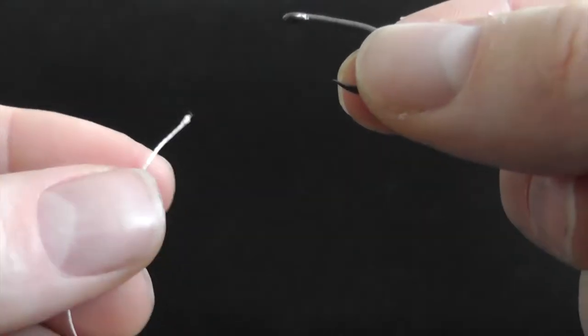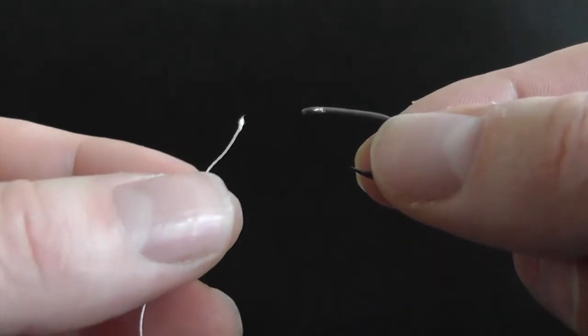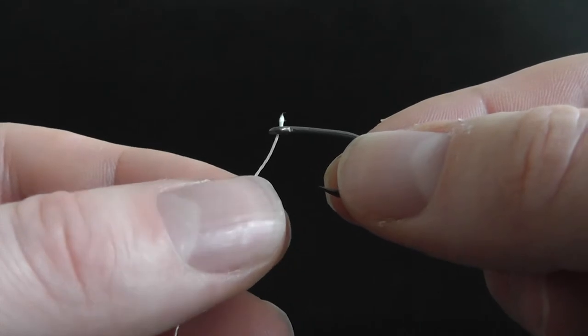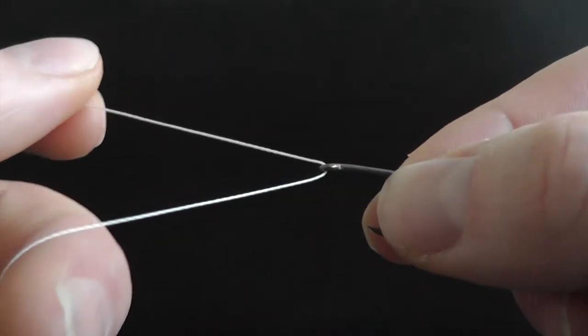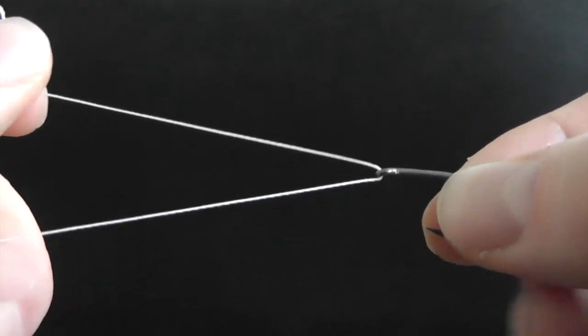We're going to take our main line. In this case I'm using a white braid so it's easier to see. We go up through the eye from the point of the hook and we pull up enough line to make five or six turns around itself.